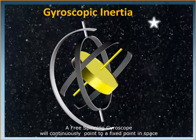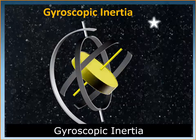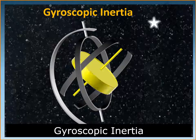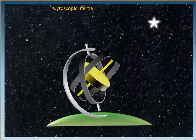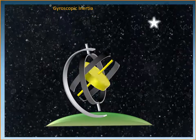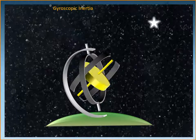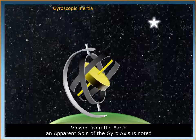However, it is not that simple. This will happen only if the Earth was not spinning on its own axis. Because the Earth is spinning and the gyroscope is situated on the Earth, the movement of the Earth has an impact on the movement of the gyroscope as well. If the maximum RPM is maintained and the gyroscope is made to point towards a fixed direction, it should continue to do so based on Newton's law and gyroscopic inertia.